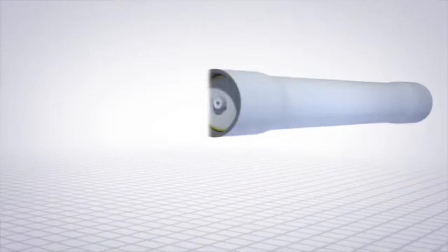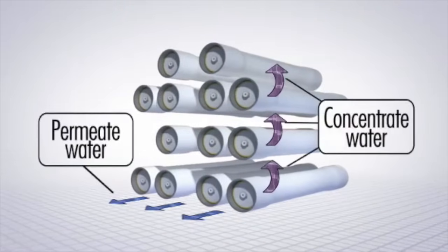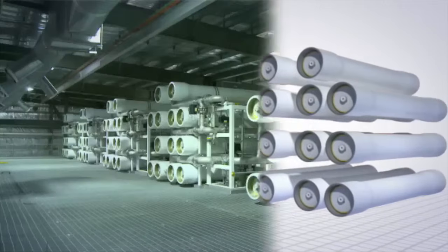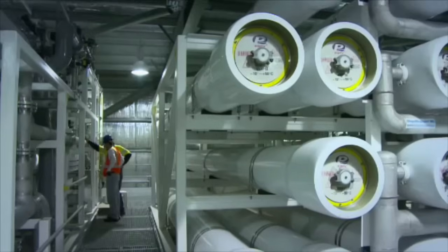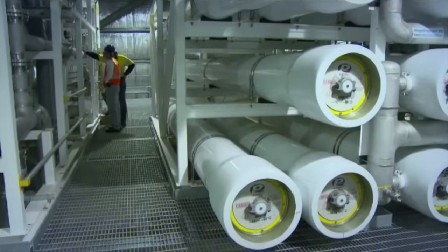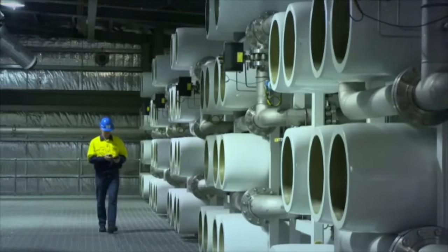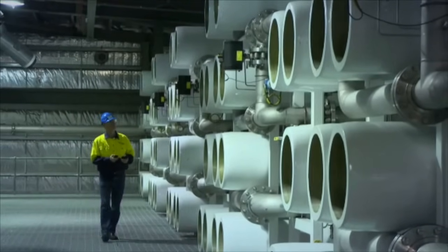The pure permeate water flows out the core tube and one end of the pressure vessel and the concentrate water flows out another outlet. The concentrate water can then flow into other pressure vessels for the same process to happen again, so even more pure permeate water can be recovered. About 82% of all the source water becomes purified water.